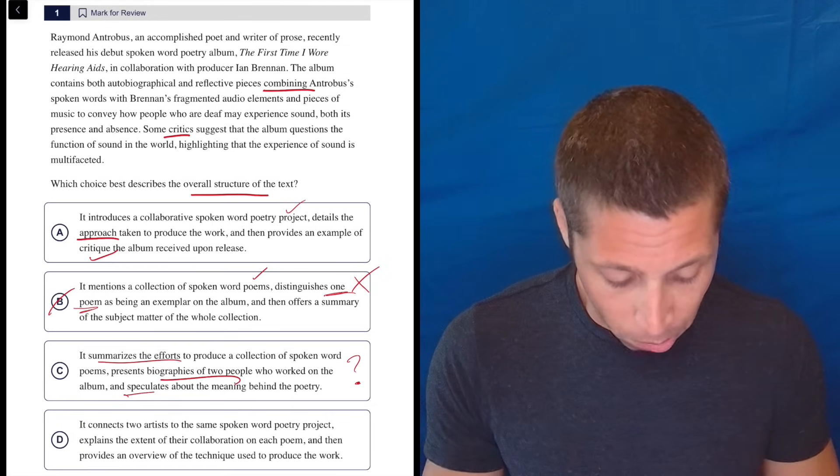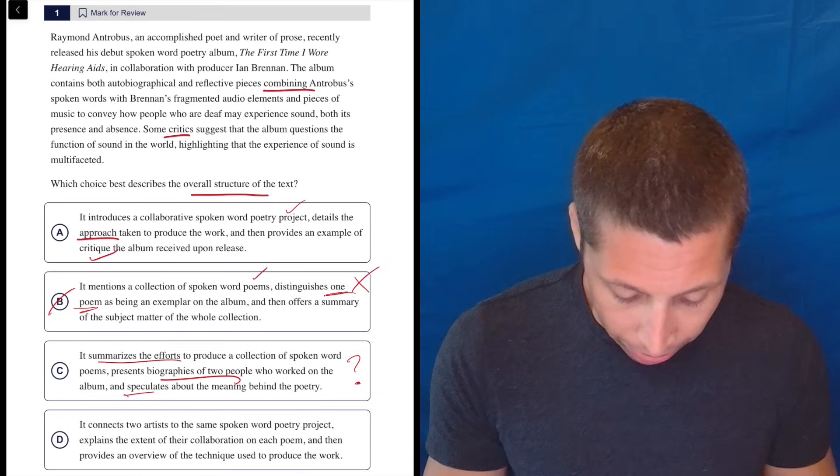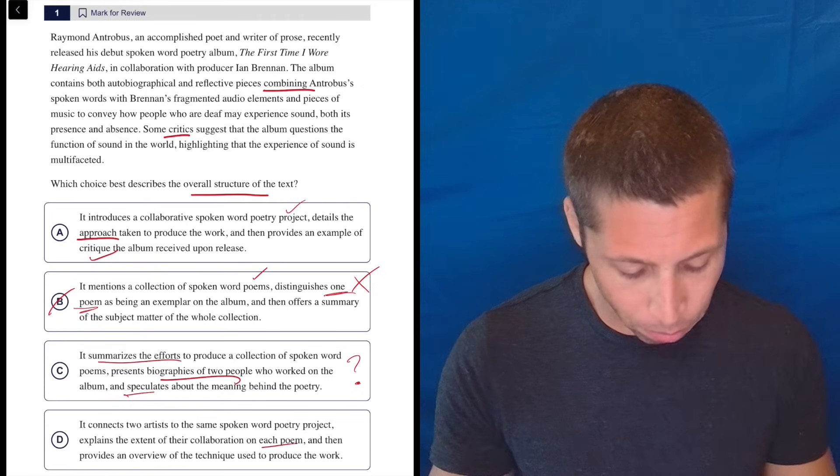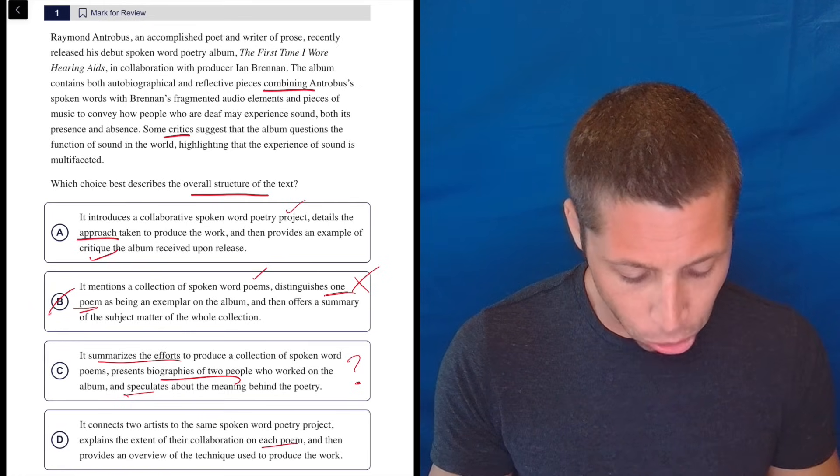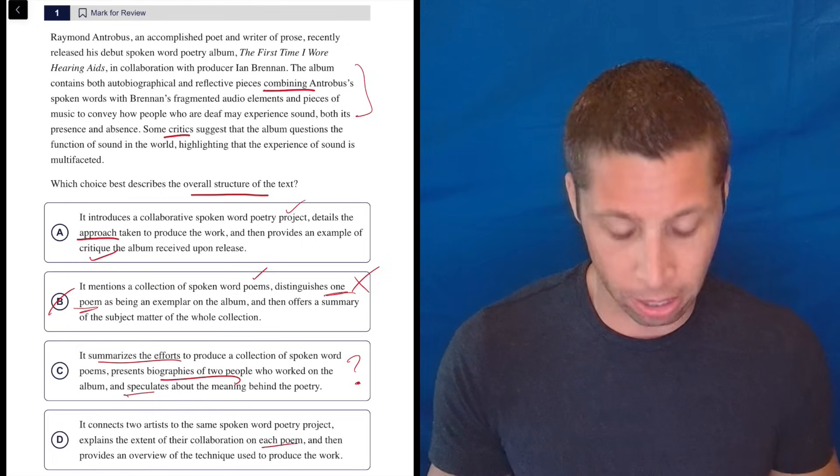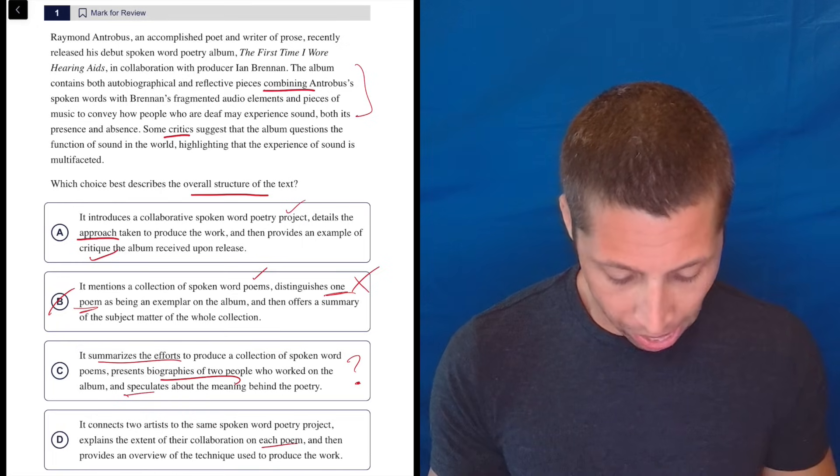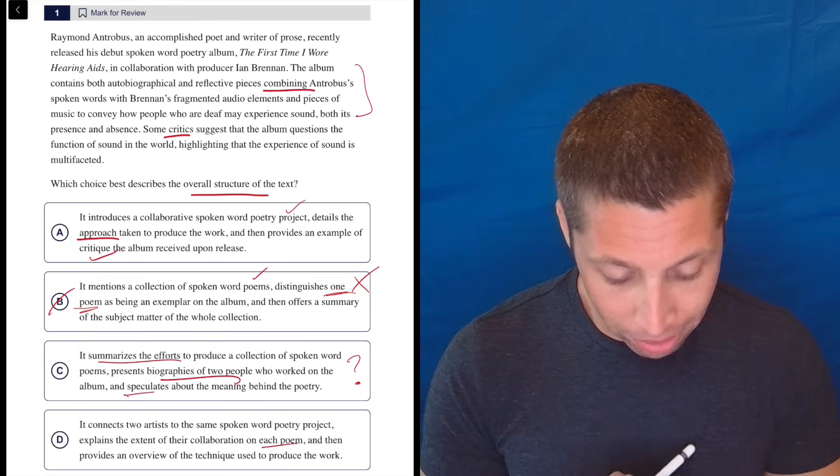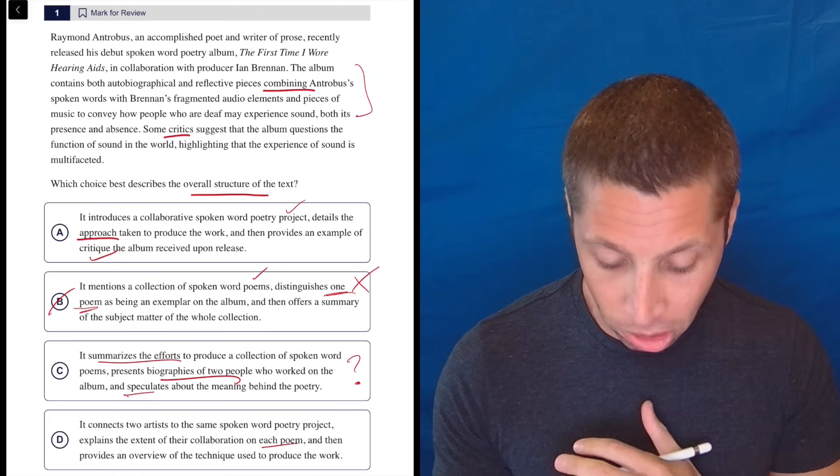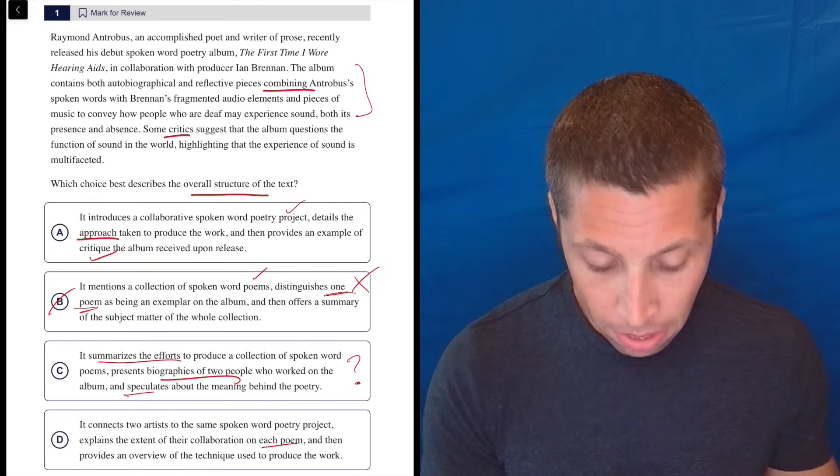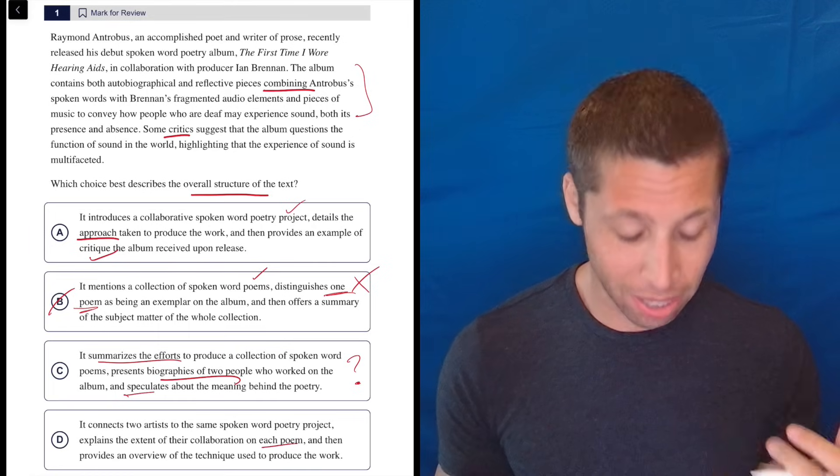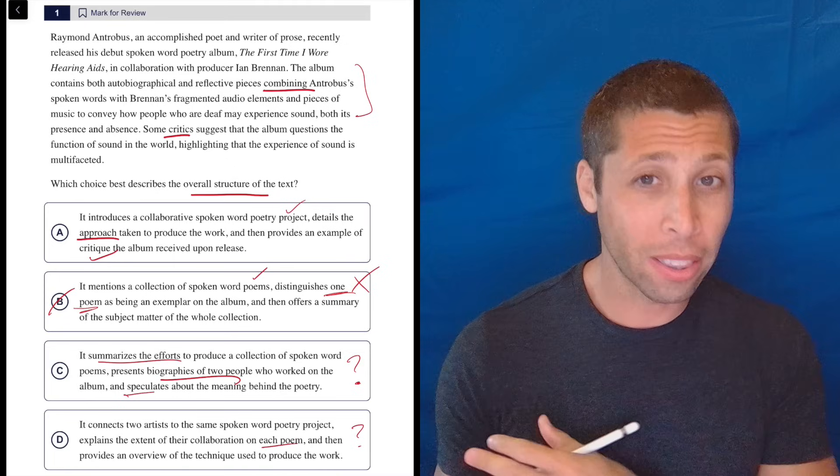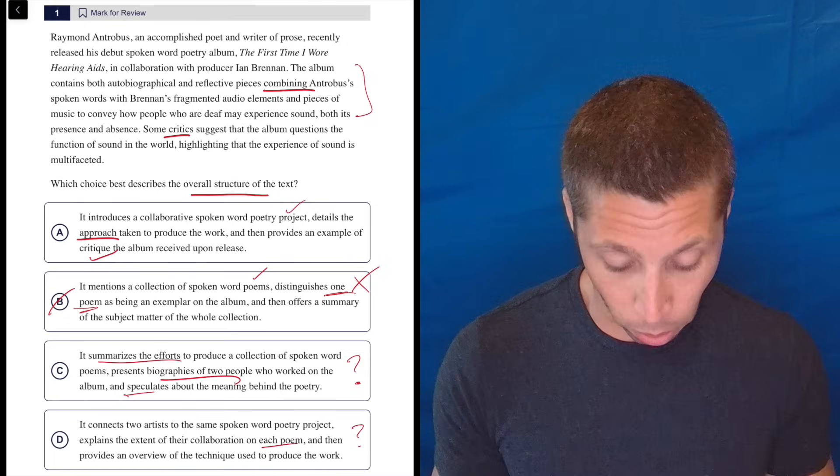D, it connects two artists to the same spoken word poetry project. Maybe. It explains the extent of their collaboration on each poem. Did it really? It's not separating out particular poems. And then provides an overview of the technique used to produce the work. Well, it does talk about the technique in the middle here. I don't think it's the last thing. And so it explains the extent of their collaboration on each poem. I think maybe generally speaking, it says it's combining Antrobus's spoken words with Brennan's audio elements. Is that the extent of their collaboration? This kind of feels like C, where I can kind of stretch it to make it work. But there are things in A that I kind of knew right away worked. So let's go back to A.